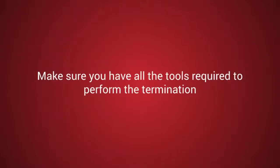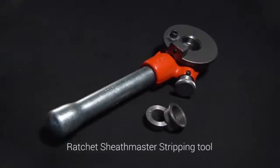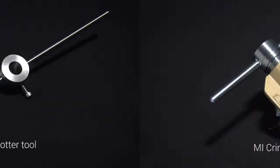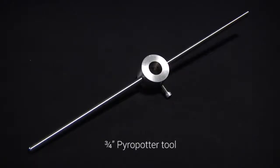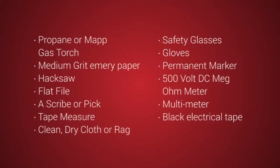Also make sure that you have all the tools required to perform the termination. A Pyrotanax sheath master tool for stripping MI cables up to three-quarters inches in diameter, a ratchet sheath stripping tool for cables larger than three-quarters of an inch in diameter, an MI crimp tool, a PyroPak tool, and a Pyrotanax hand vise. In addition, check that you also have the following set of standard tools in your kit. Do not proceed until you do.